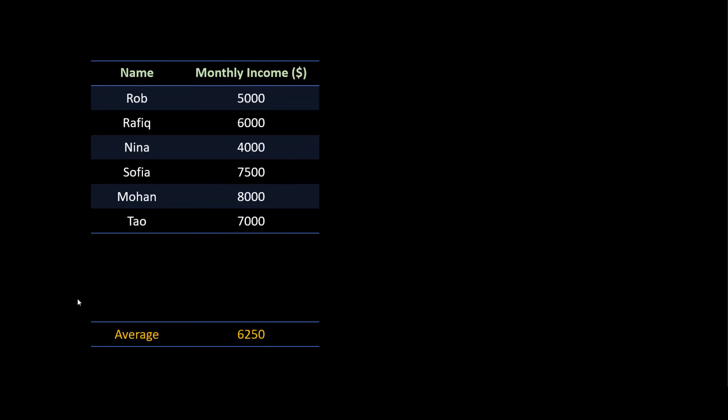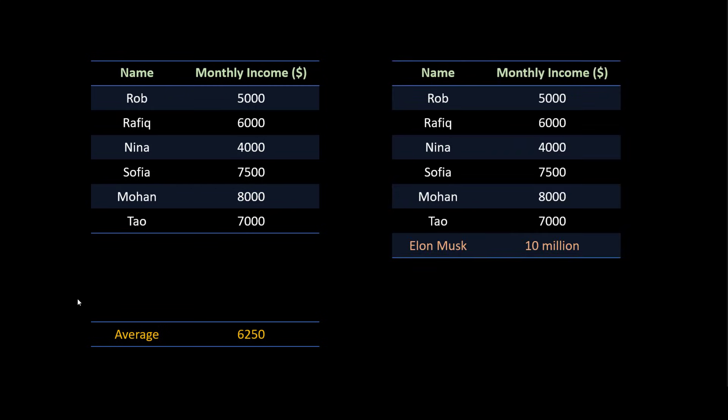But I got lucky here. What if this dataset has some outlier? Outlier means some unusual values. Let's say Mr. Elon Musk is living in my town — he obviously has a very high income. And if I use average now, the average will be $1.43 million. And if I use this average number to make that decision, then it will be a bad decision. Because obviously people are not earning $1.43 million on average — we got this number just because of some outliers. So in this case, using average is not a good idea.